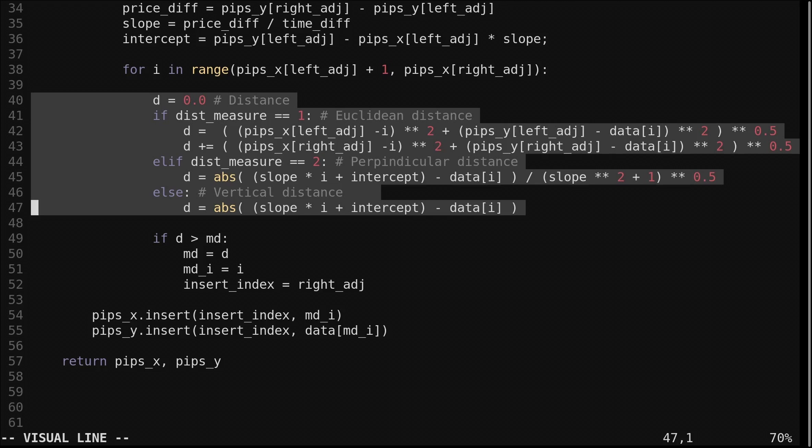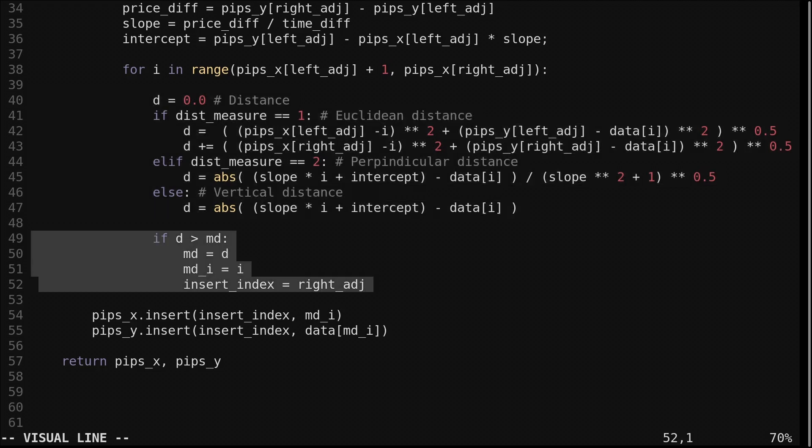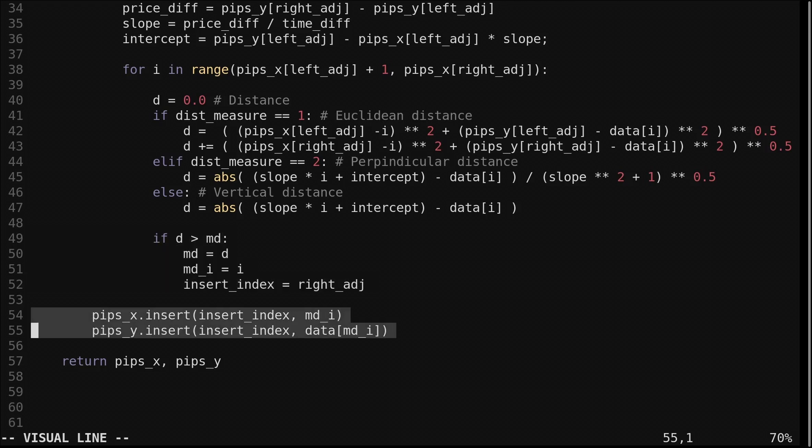Then we loop through each point between the current pair of adjacent points. We calculate the distance depending on the selected distance measure. Then check for and record a larger distance if found. After looping through each point we record the point of max distance as the next point.